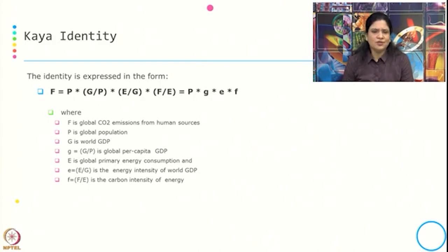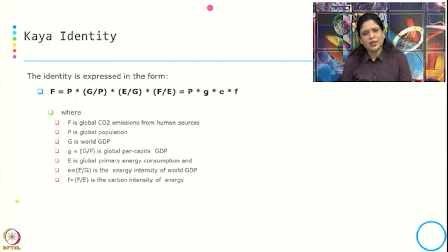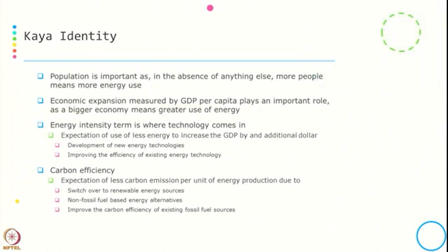Simplifying this, the identity is: population multiplied by GDP per population, multiplied by energy consumption per GDP, multiplied by global CO2 emission per unit of energy. Population is important because more people means more energy use, and more energy use means more impact. Economic expansion measured by GDP per capita plays an important role: a bigger economy means more income, more income means more consumption, and more consumption means greater use of energy.